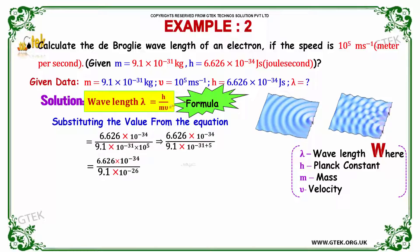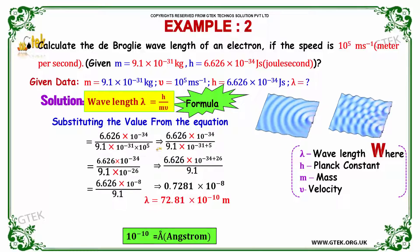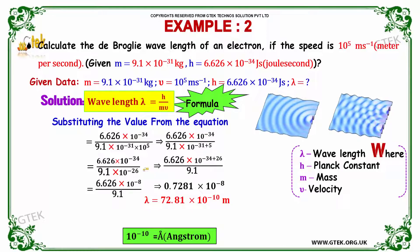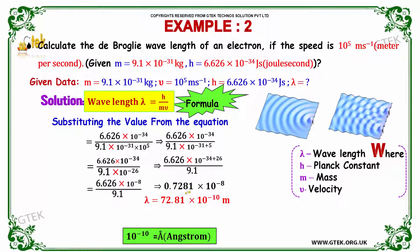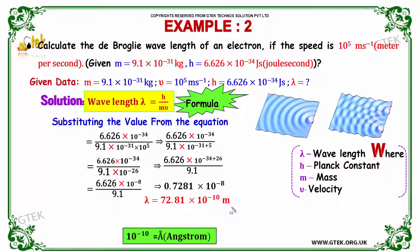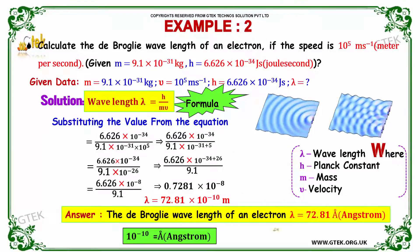So λ = h / (mv). Substituting the values: λ = 6.626 × 10⁻³⁴ divided by (9.1 × 10⁻³¹ × 10⁵), giving 6.626 × 10⁻³⁴ / 9.1 × 10⁻²⁶, which equals 0.7281 × 10⁻⁸, or 72.81 × 10⁻¹⁰ meter. The de Broglie wavelength of the electron is 72.81 Ångström.